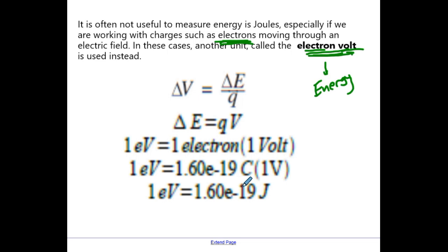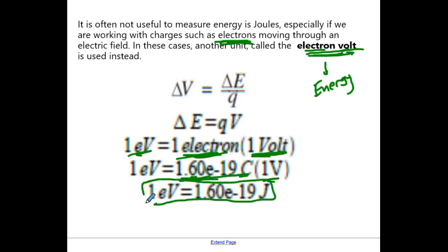If you had one electron working with one volt, that would give you one electron volt. The math works out because an electron has an elementary charge of 1.6 × 10⁻¹⁹. If you times that by one volt, you get 1.6 × 10⁻¹⁹ joules. This is actually a conversion that's on the back of your data sheet — it's good to know that one electron volt equals this many joules. Sometimes we'll be asked to convert between joules and electron volts, and all you need to know is this number as a ratio.